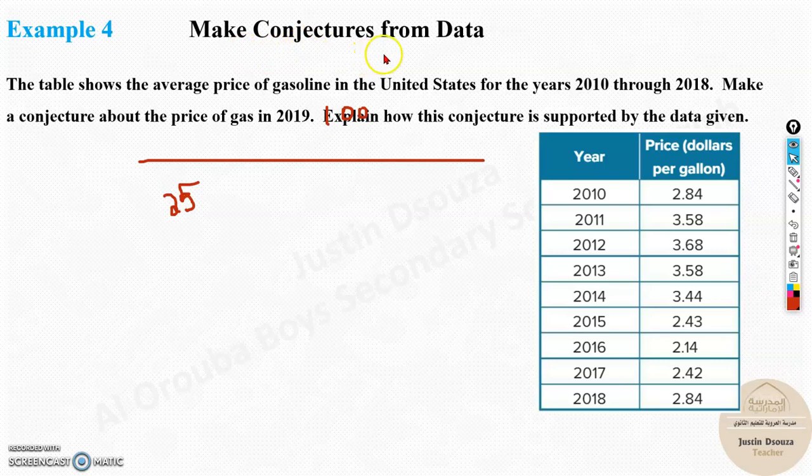Make conjectures from data. You have been given a table of data. The table shows the average price of gasoline in the US for the years 2010 through 2018.